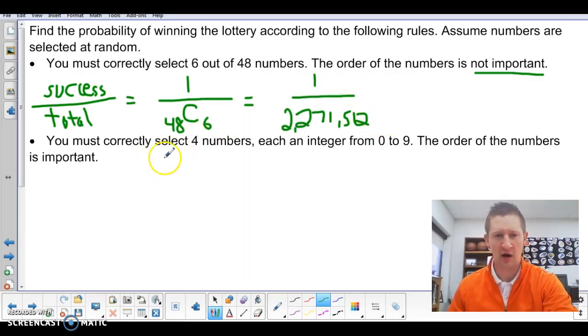Okay. What if we just have to pick out 4 numbers? Is it any better? So we're going to pick out 4 numbers. Each is an integer from 0 to 9. You'd think we'd probably be okay. It's probably a little bit better. Here, the only thing we're going to change is we're going to say the order of the numbers is important.